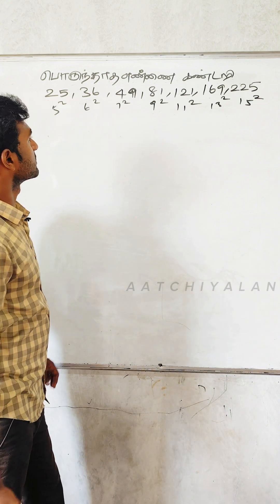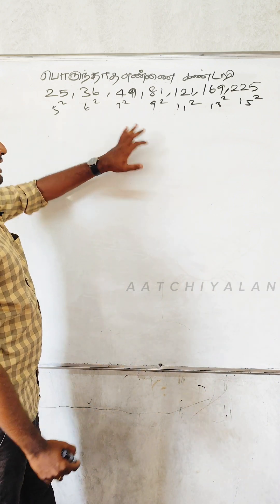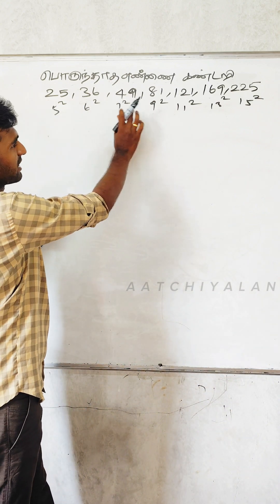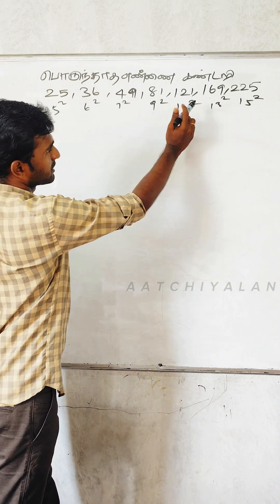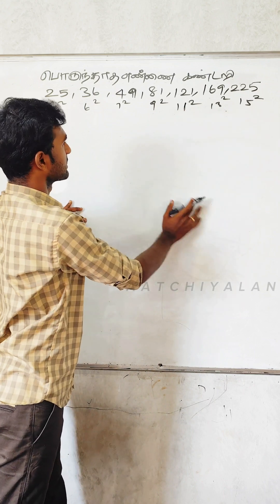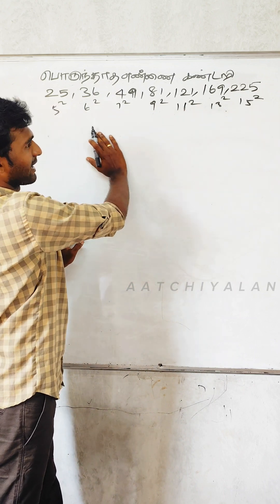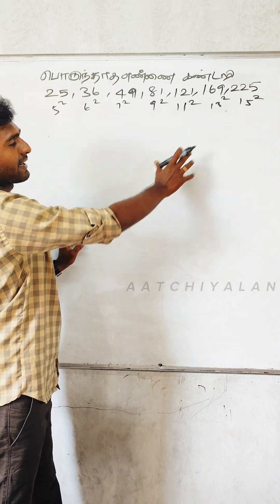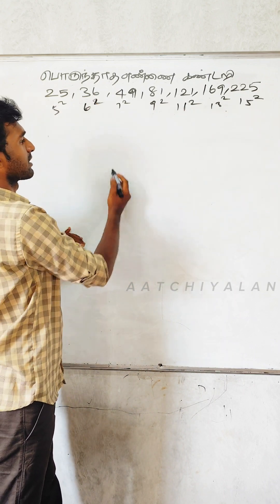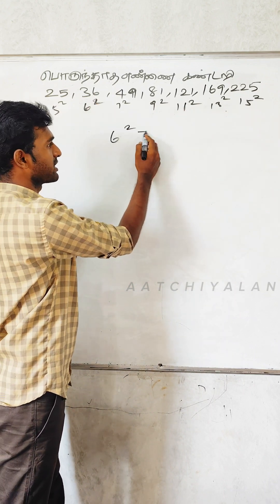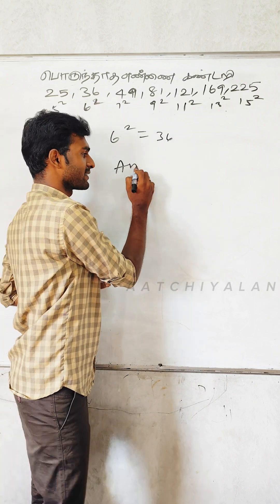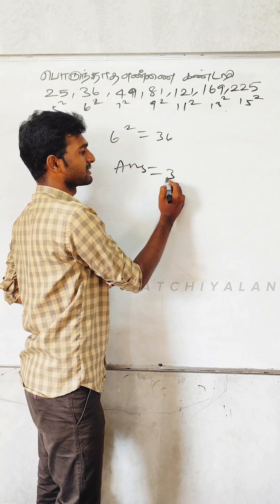What do you want to do with this? Let me tell you: 5, 6, 7, 11, 13, 15 — everything is an odd number. 6 squared is equal to 36. So, 6 square is equal to 36. The answer is 36.